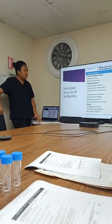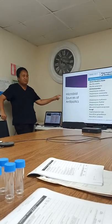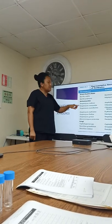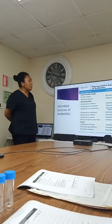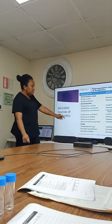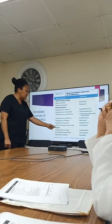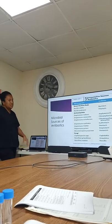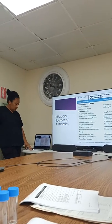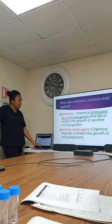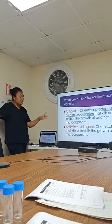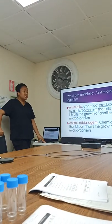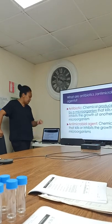When we look at the microbial source of antibiotics, you can see bacitracin is made from Bacillus subtilis, which is a gram-positive rod. Penicillin is made from a fungus called Penicillium notatum, and so forth. Antibiotics are chemicals that are produced by microorganisms to kill or inhibit the growth of another microorganism.